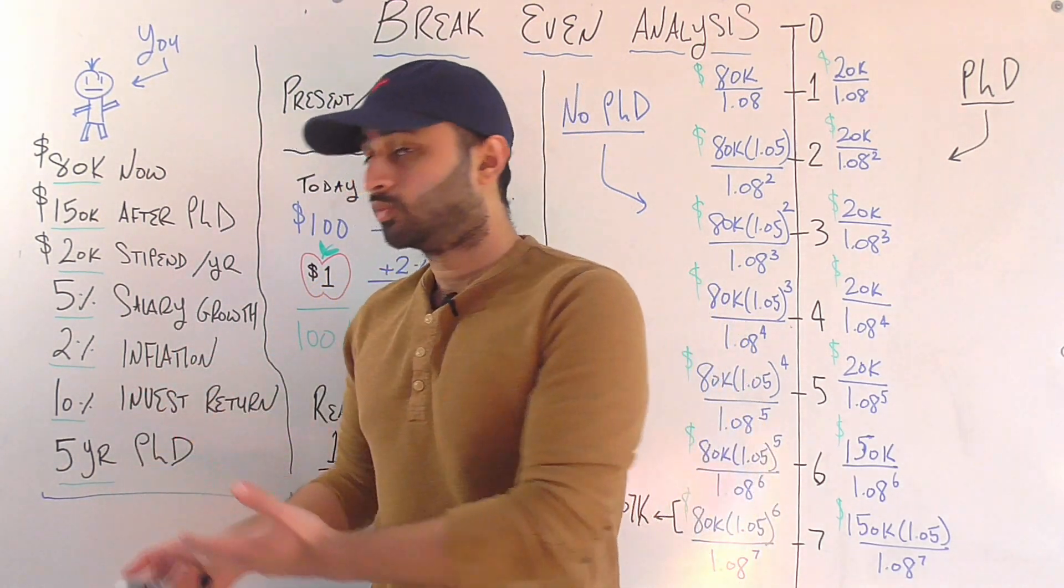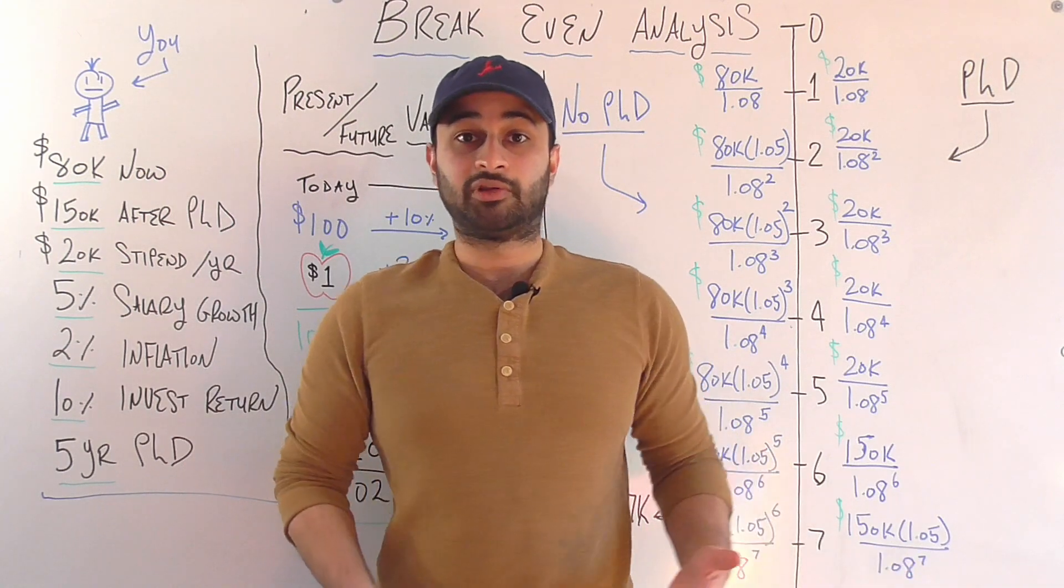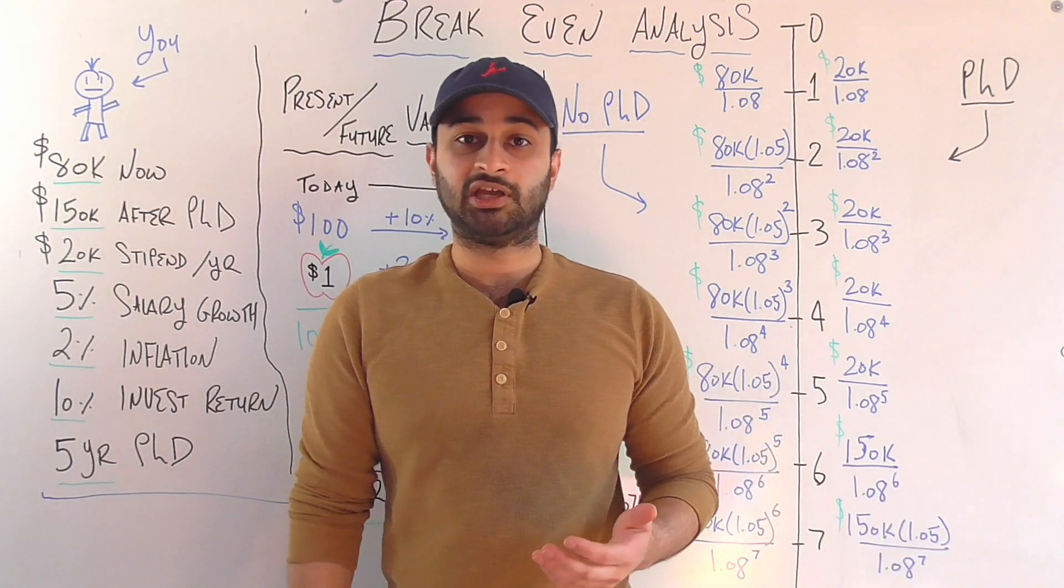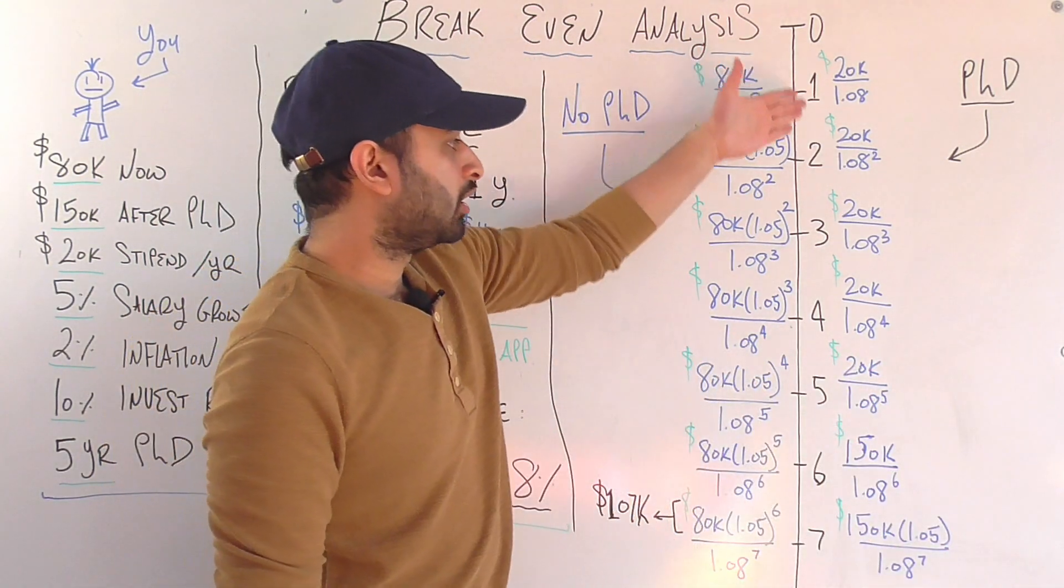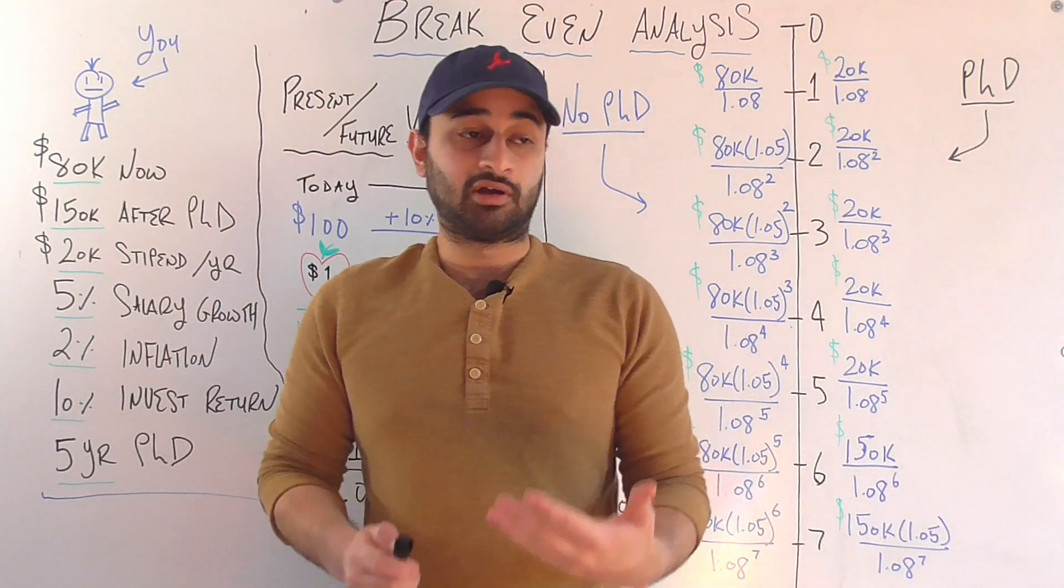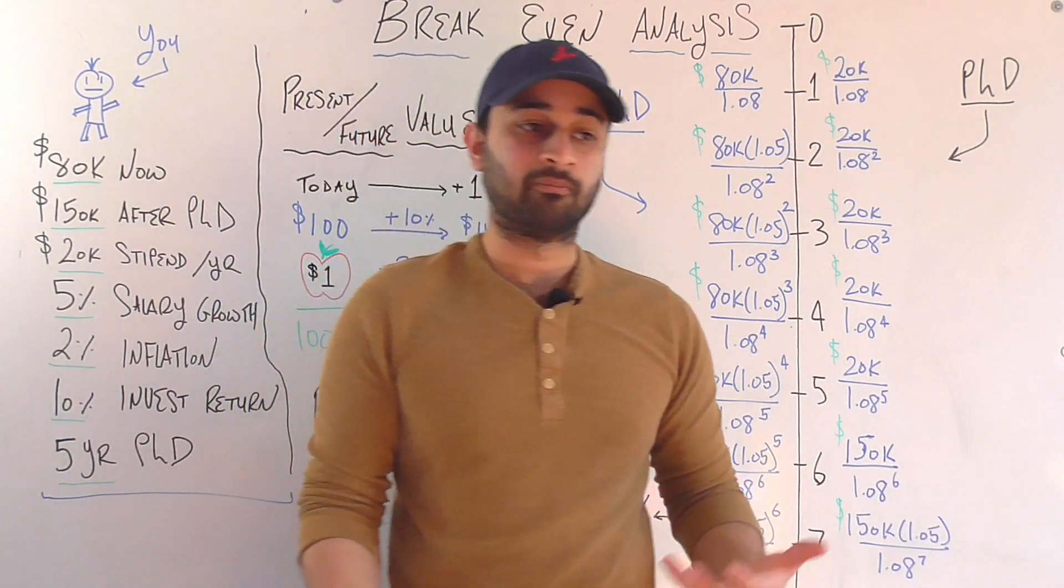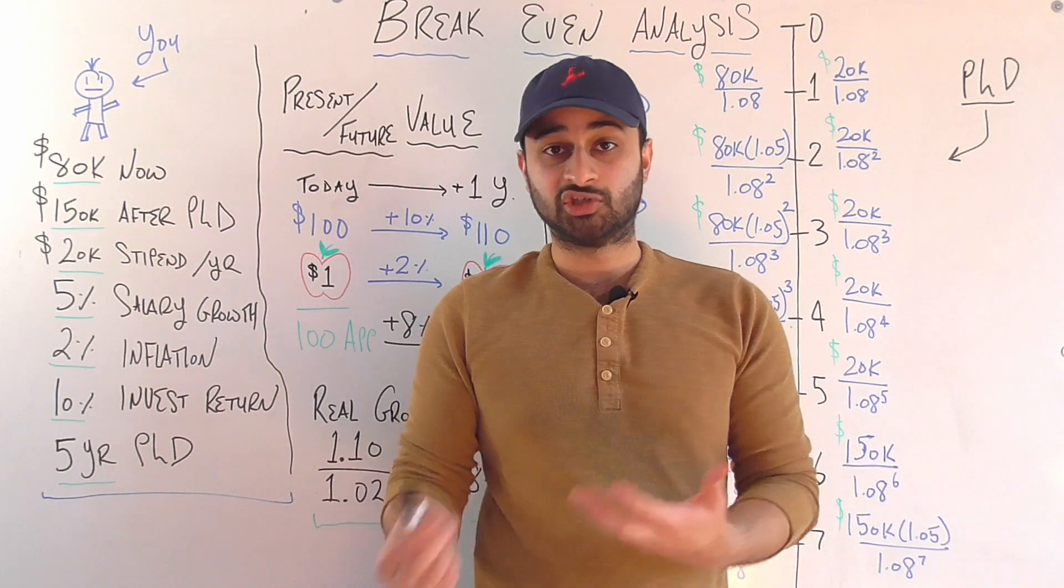If we do include those factors, we get a more complete analysis. But that doesn't mean you can't include more factors. For example, let's say you're getting your PhD in a higher cost of living area. Then you want to adjust all of these numbers here so that you're taking into account the fact that you're paying more to get your PhD. So you can kind of make this as complex as you want.